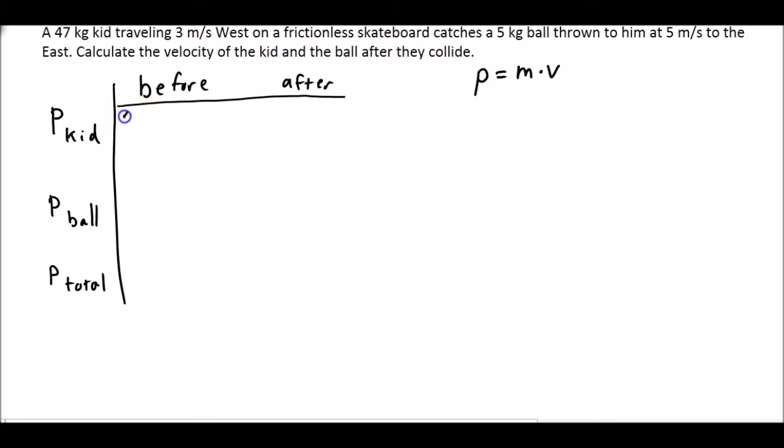So for the kid, the mass is 47 kilograms. His velocity is 3 meters per second to the west. And so his total momentum will be 141 kilogram meters per second.